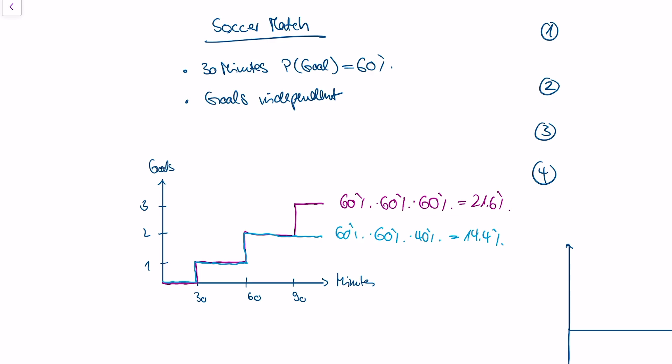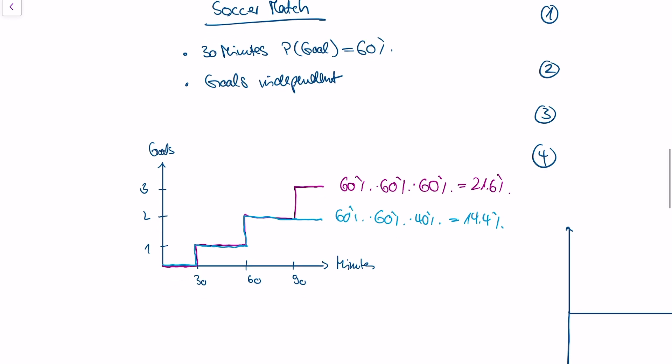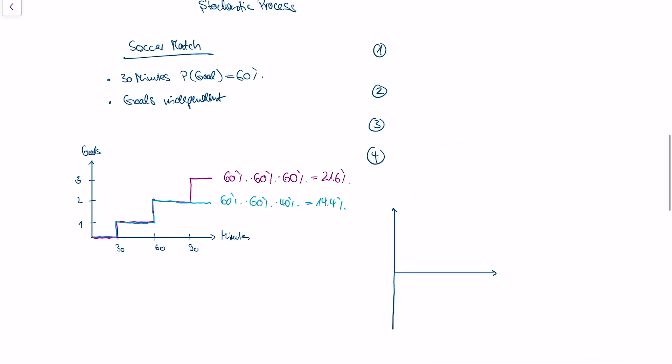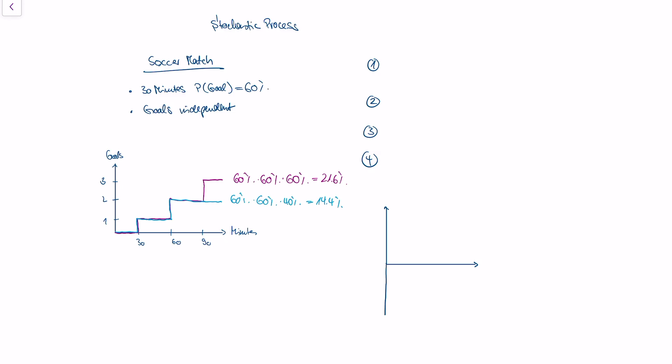It's a model of how a variable—in this example, goals in a soccer match—could evolve over time. What we can do with this is derive probabilities. We can derive the probability that the purple path is exactly the path that the goals will take in the upcoming match, or that the blue path is exactly what's going to happen. So this is what a stochastic process is.